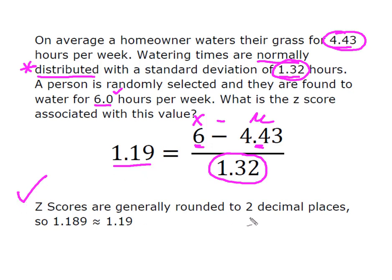Z-scores are generally rounded to two decimal places. So if you got your calculator out, you got 1.189 and change, which rounds to 1.19.